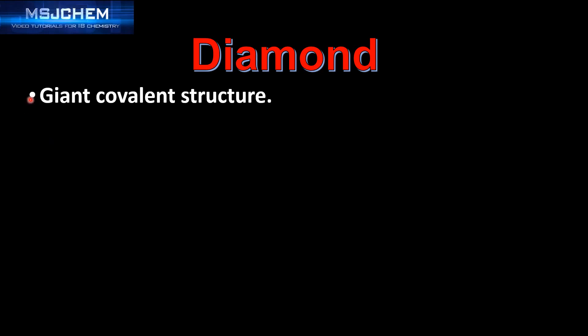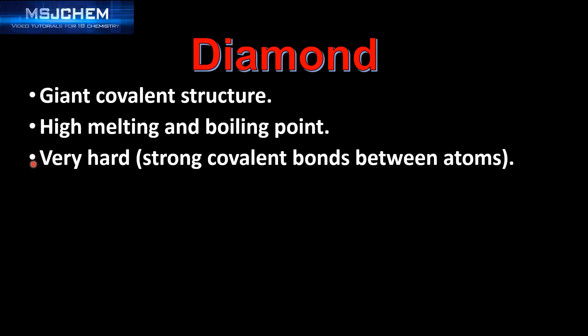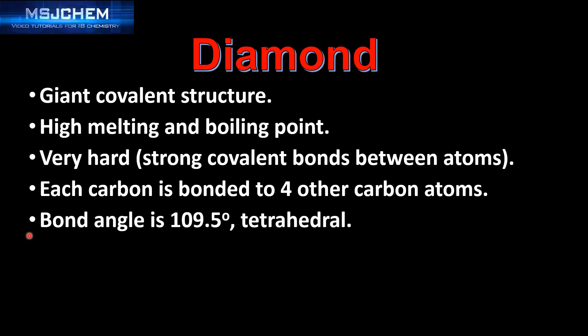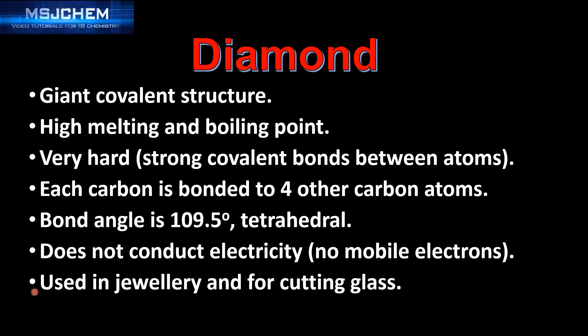Diamond has a giant covalent structure. It has a high melting and boiling point, and it is very hard due to the strong covalent bonds between the atoms. Each carbon is bonded to four other carbon atoms with a bond angle of 109.5 degrees — tetrahedral. It does not conduct electricity because it has no mobile electrons. Diamond is used in jewelry and for cutting glass.